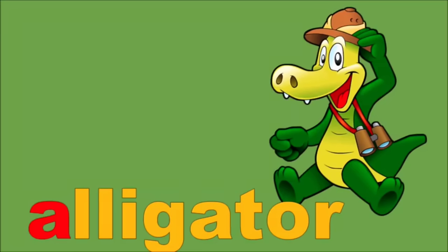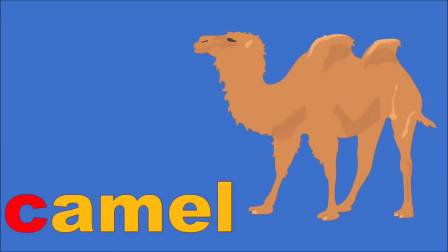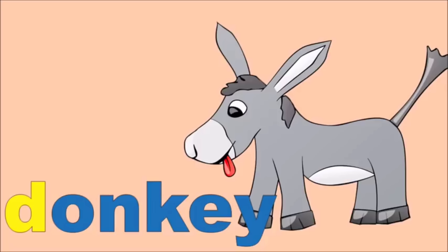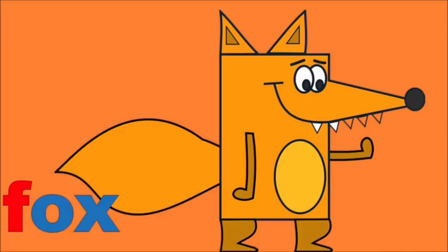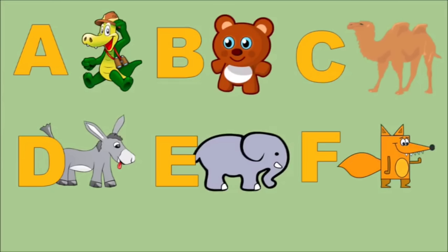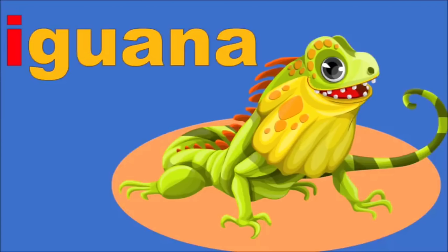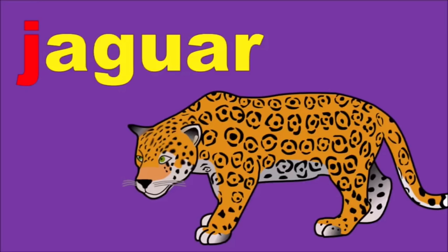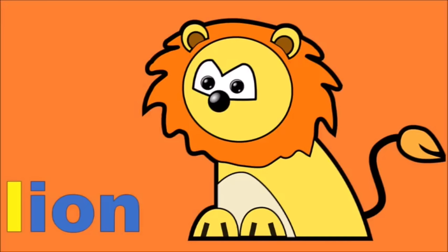A for Alligator. B for Bear. C for Camel. D for Donkey. E for Elephant. F for Fox. These are the words from the Alphabets. G for Gorilla. H for Horse. I for Iguana. J for Jaguar. K for Kangaroo. L for Lion.